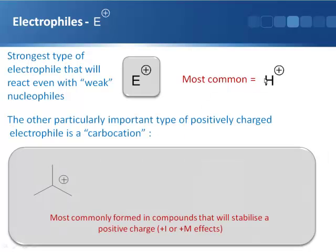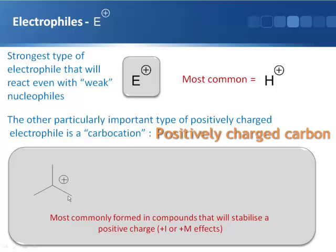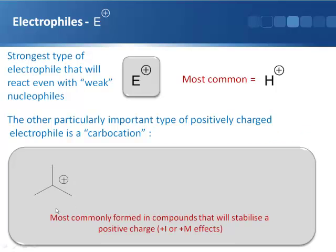The other really important type of electrophile of this type is what's called a carbocation. This is literally a species in which you have a carbon that is positively charged. Carbocations tend to form on compounds that can stabilize this positive charge, such as on a tertiary carbon, which benefits from the three inductive effects from its alkyl substituents.